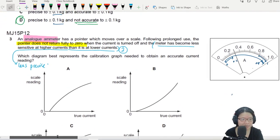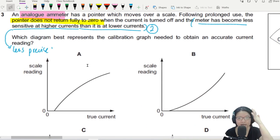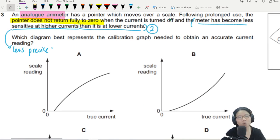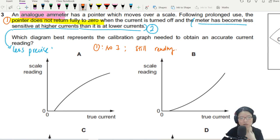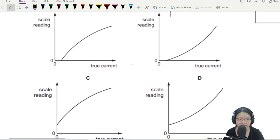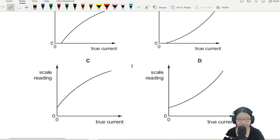Let's go back to this one. It says that it is less precise at higher currents and pointer doesn't return to 0. The easiest one to address is issue number one, pointer does not return to 0. If the pointer does not return to 0, this means that when there is no current, there is still reading. So in this case, I need to make sure that the graph will show that when there's no current, the reading doesn't count.